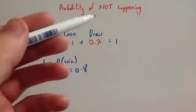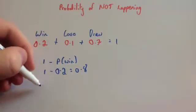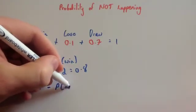So therefore, to find the probability of an event not happening, 1 subtract the probability of it happening.